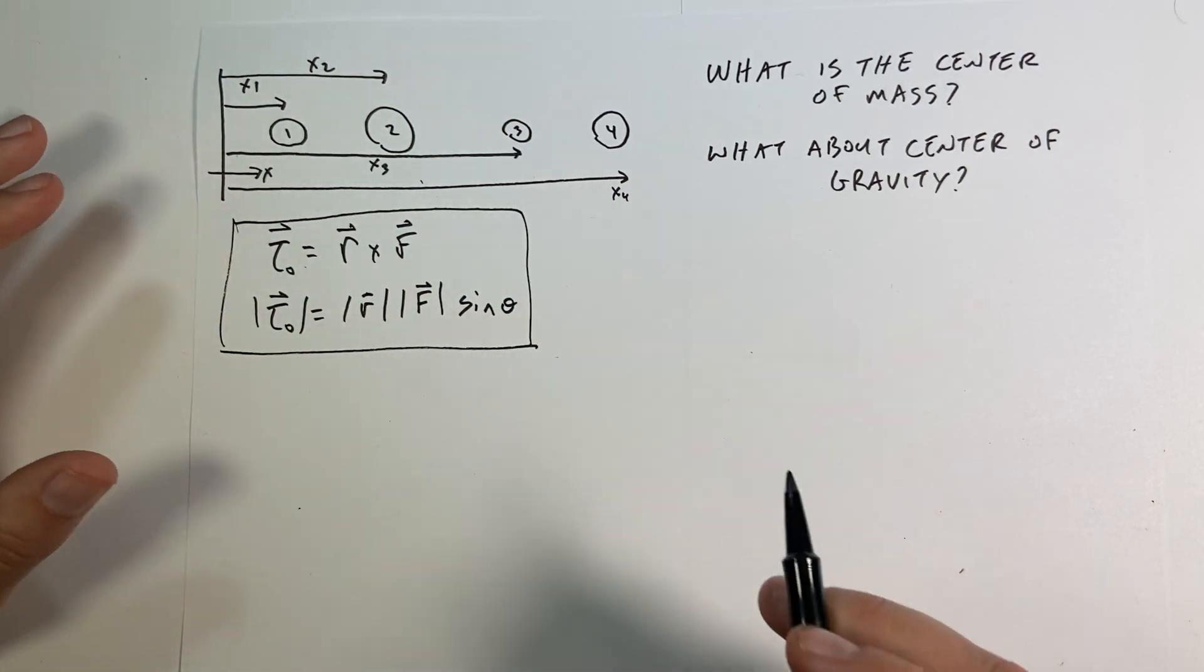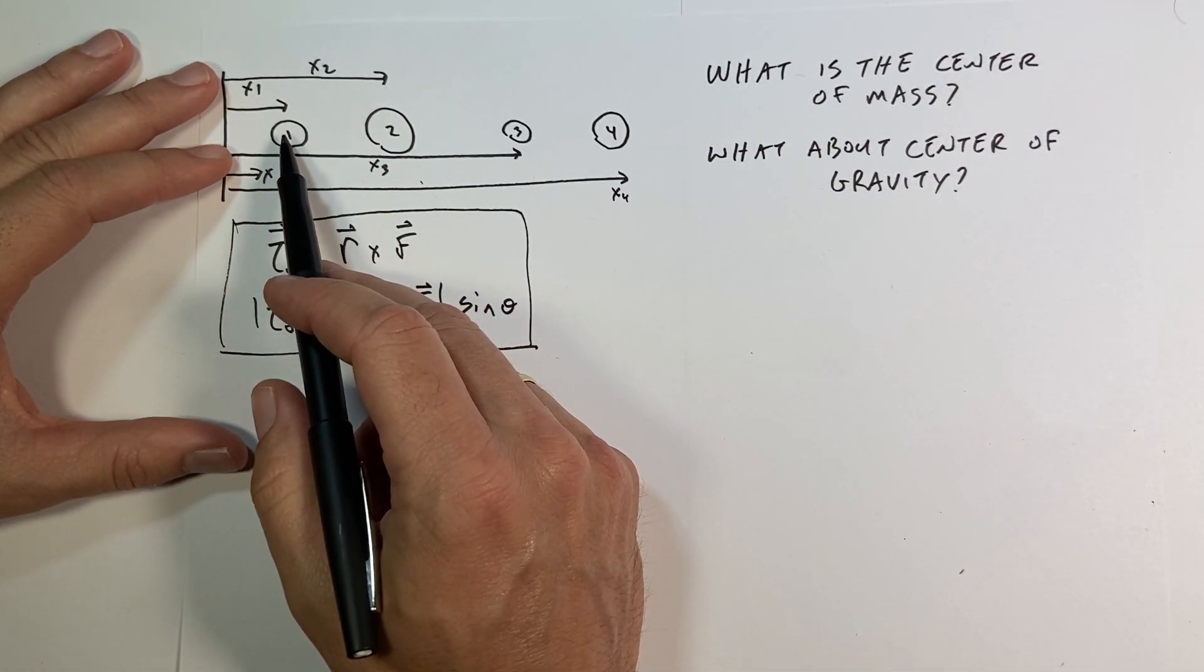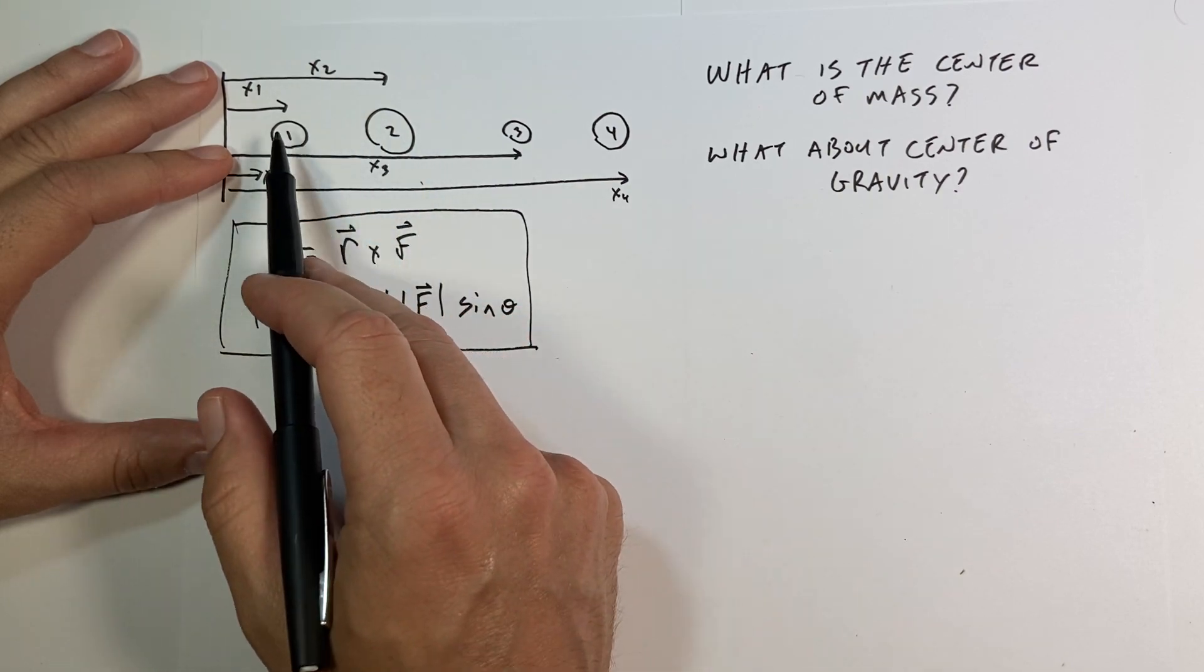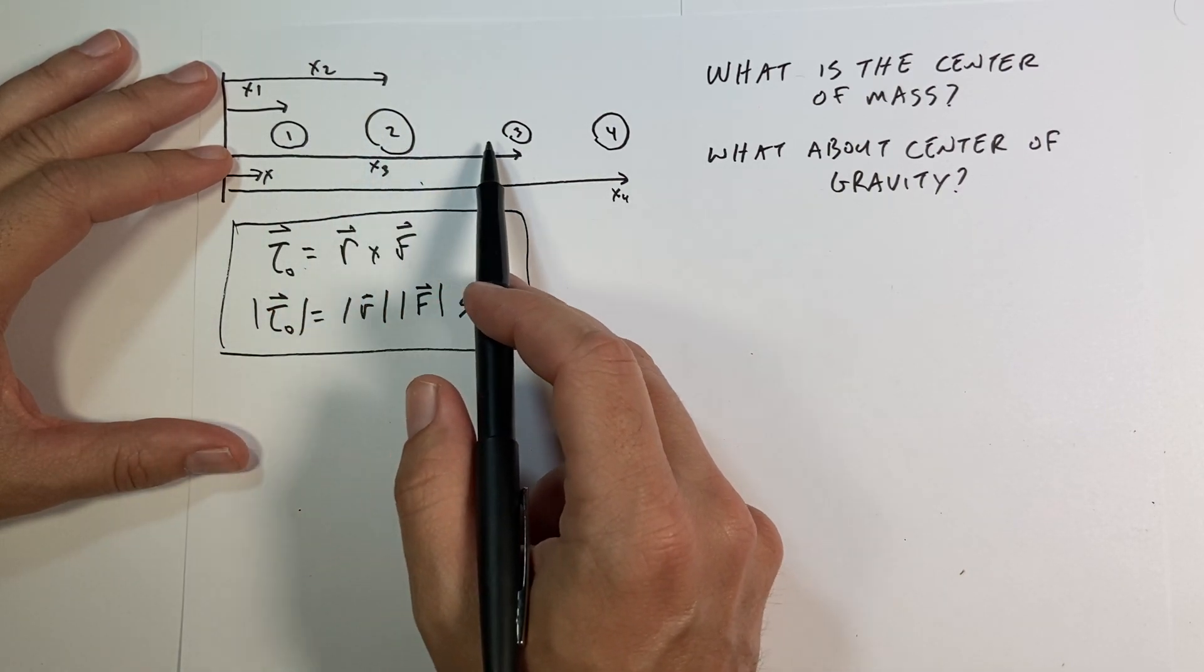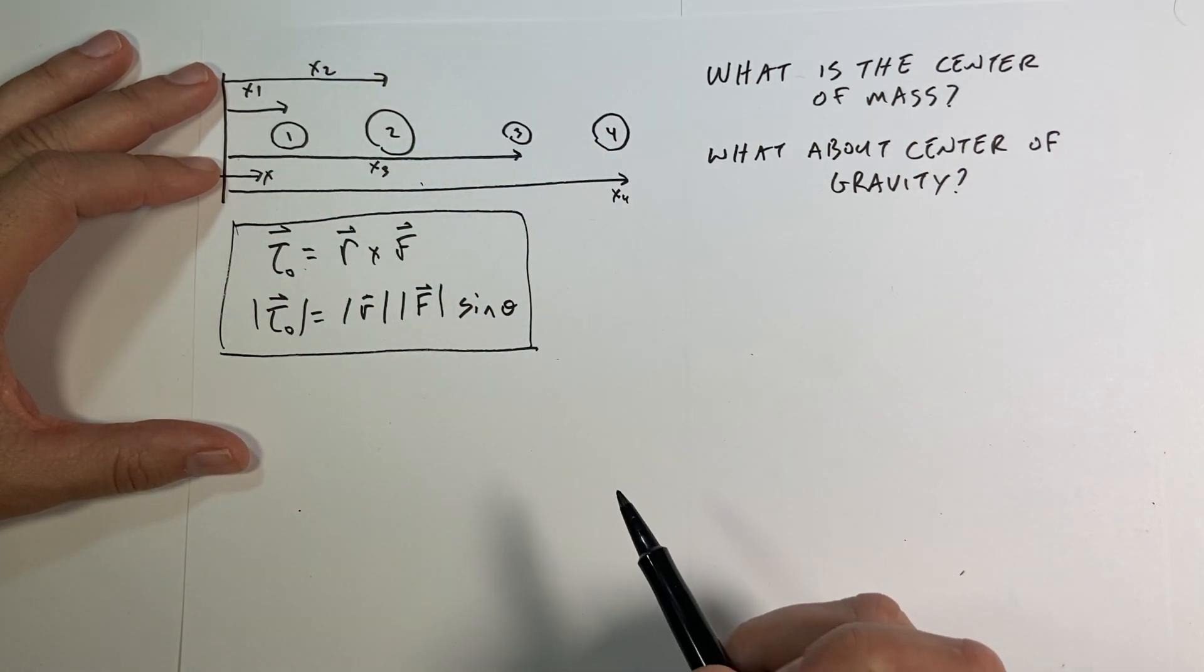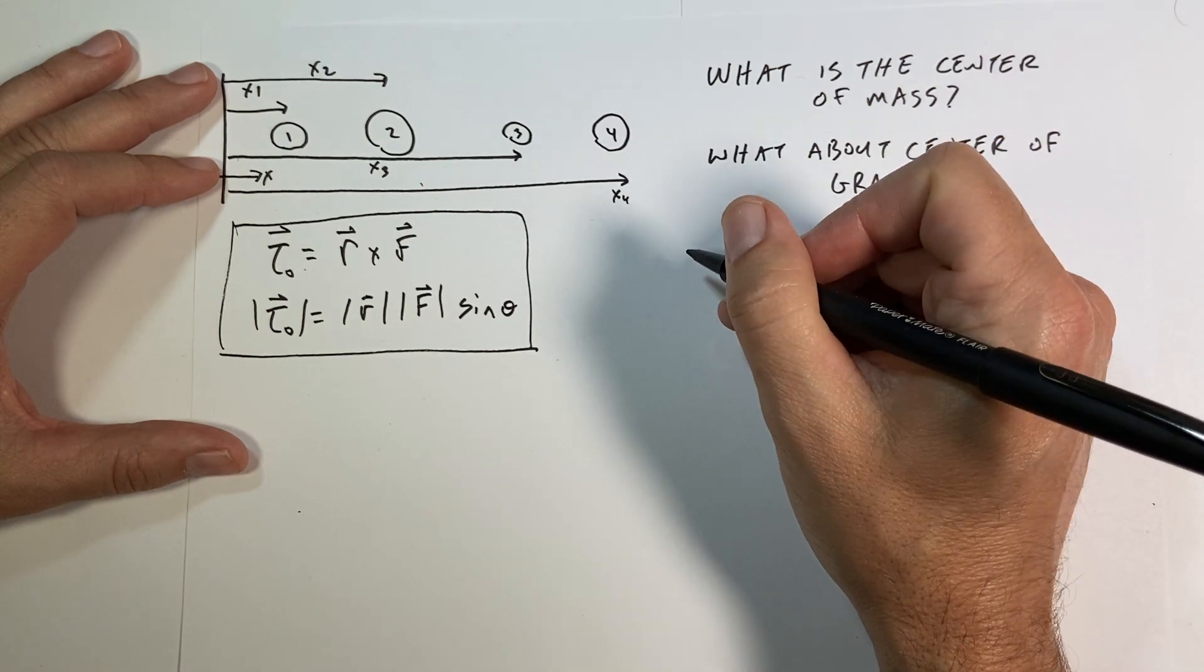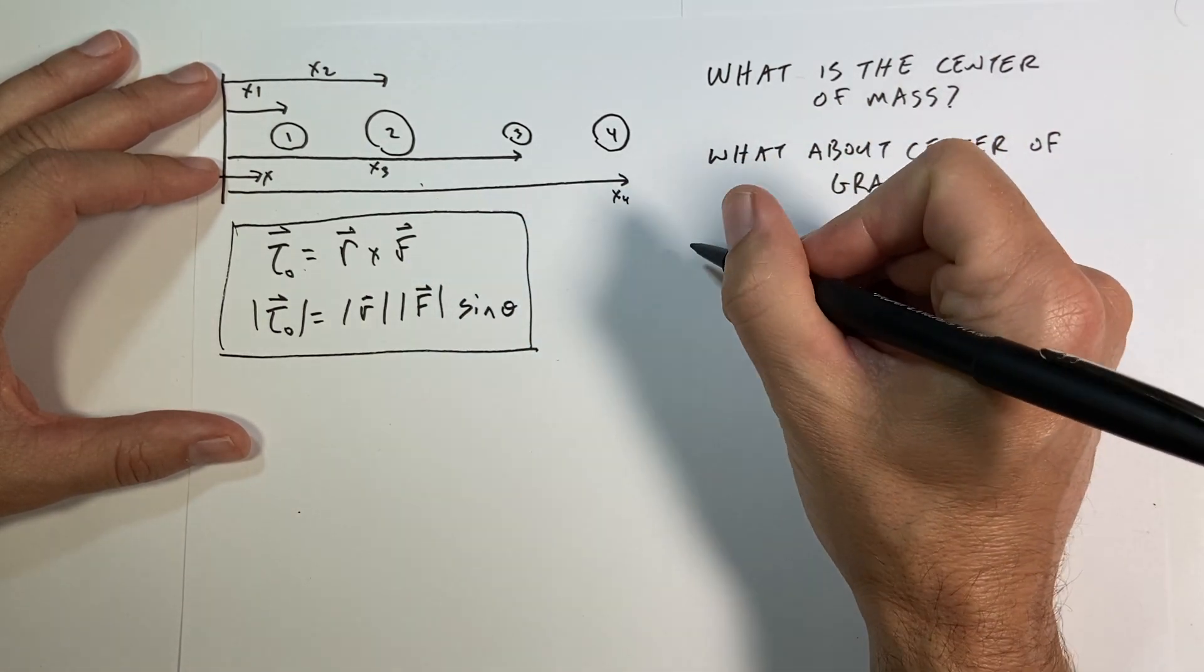Now what about center of mass? Let's just define - suppose I have these four masses, and they're different. See, I drew them different, so you can tell they're different. So I have M1, 2, 3, and 4, and there are different locations, X1, 2, 3, and 4. Let me first of all define the center of mass and show you where that comes from, really. It comes from torque.